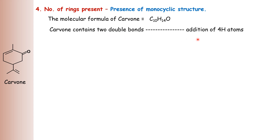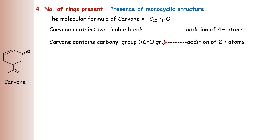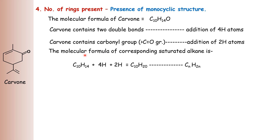For two double bonds we have to add four hydrogen atoms. Then oxygen is in the form of a carbonyl group, and in a carbonyl group the oxygen requires two additional hydrogens for saturation. Therefore the molecular formula of the corresponding saturated alkane is C10H14 plus 4H for double bonds plus 2H for the carbonyl group.